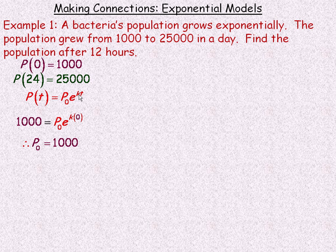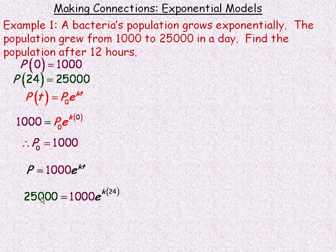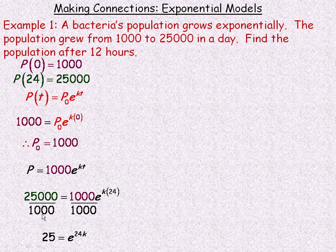Now we need to find the growth constant k. We substitute 25,000 in place of the population and 24 hours in place of time, giving us 25,000 = 1,000 · e^(24k). Dividing out the 1,000 gives us 25 = e^(24k).